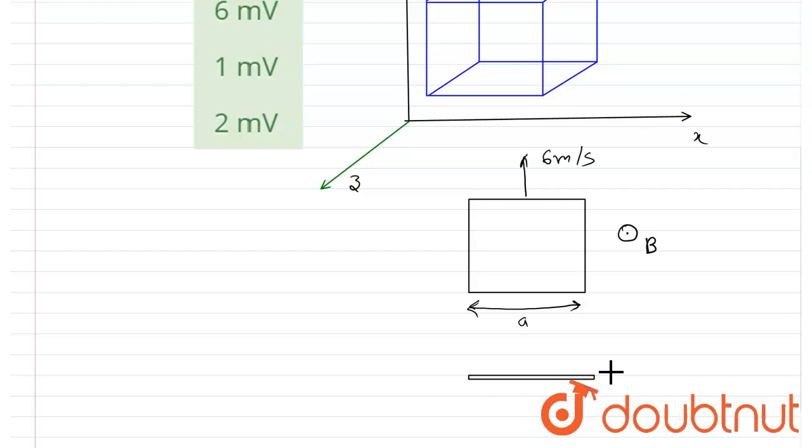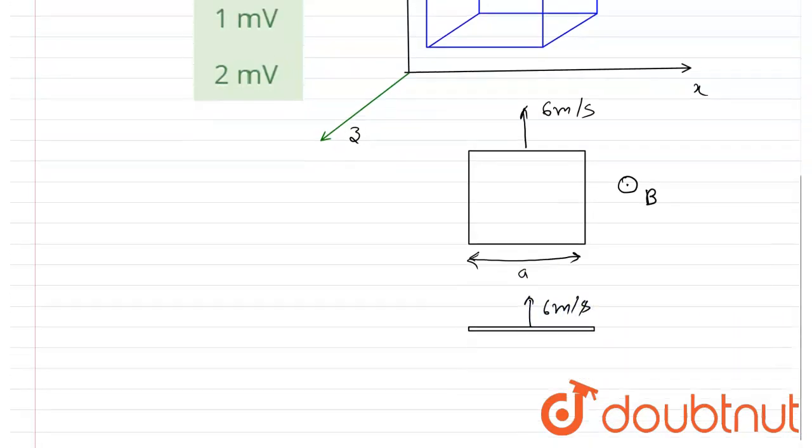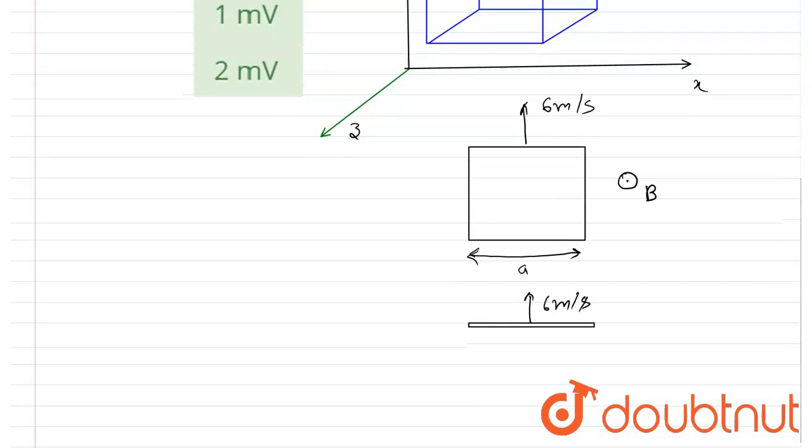Now it became a rod which is moving with velocity 6 meters per second in this direction. Since this length along the velocity, there won't be any induced EMF along this length.